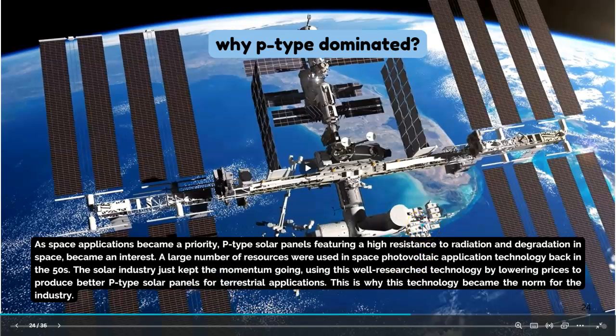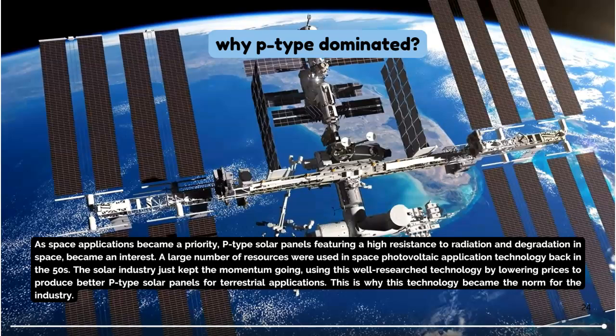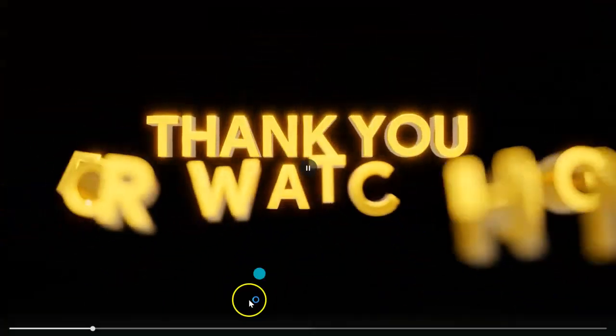Earlier, P-type solar panels were used in space applications, but because they became the norm since the 1950s, the solar industry started producing better P-type solar panels for terrestrial applications — that is why this technology became the industry norm. Later on, N-type solar panels came into the market and became popular. But it was P-type solar panels that started the trend in the solar industry. Thank you very much. Have a nice day.